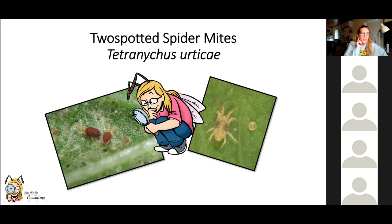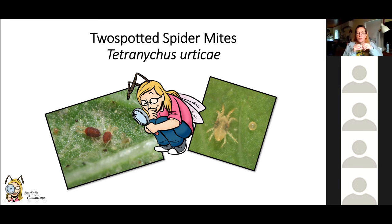Speaking of mites — the two-spotted spider mite identification has gotten a little trickier. We've been seeing more of what we call the red form of the two-spotted spider mite. It's the same species as the typical greenish one, but it's considered the red form. In more tropical or warmer environments this gets confusing because there are many other red spider mites in the Tetranychus family.